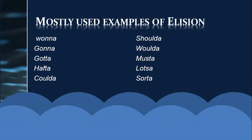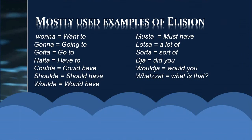Here are commonly used elisions with their full forms: 'wanna' = 'want to,' 'gonna' = 'going to,' 'gotta' = 'got to,' 'hafta' = 'have to,' 'coulda' = 'could have,' 'shoulda' = 'should have,' 'woulda' = 'would have,' 'musta' = 'must have,' 'lotsa' = 'a lot of,' 'sorta' = 'sort of,' 'didja' = 'did you,' 'wouldja' = 'would you,' 'whadda' = 'what is that / was that.'